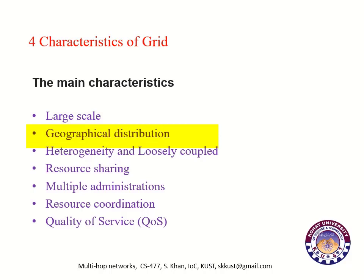Number two: geographical distribution. Grid resources may be spread geographically across hundreds of different network domains. As we know, cluster computing operates within a local area network, whereas grid computing operates across different network domains.